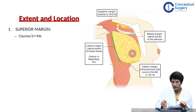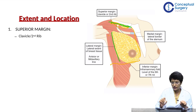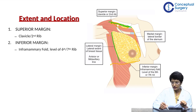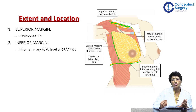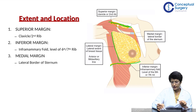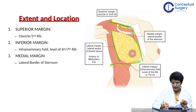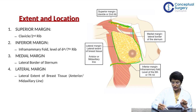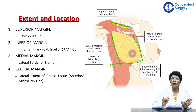Looking at the margins: the superior margin corresponds to the clavicle, essentially the second rib. The inferior margin is the inframammary fold and corresponds to the sixth or seventh rib. The medial margin is the lateral border of the sternum, and the lateral margin corresponds to the anterior axillary line or the midaxillary line.